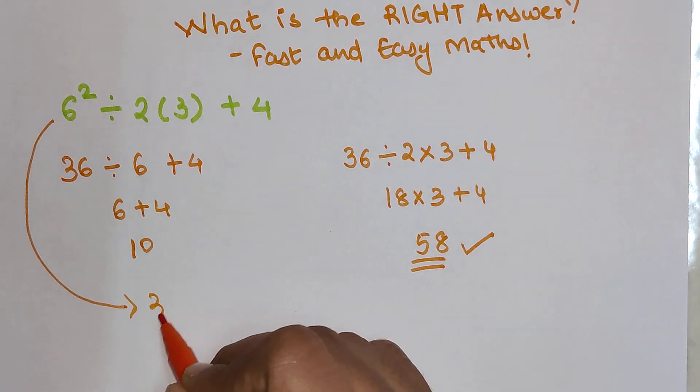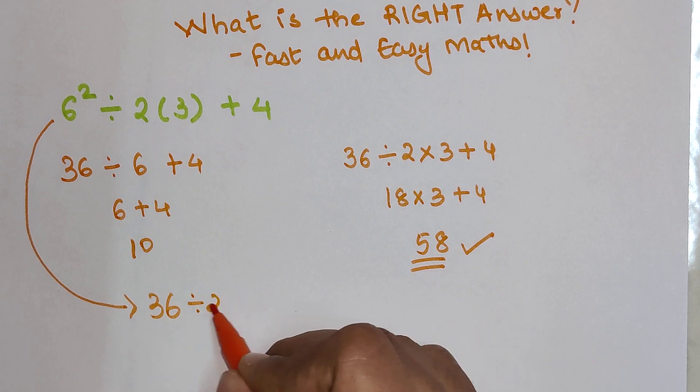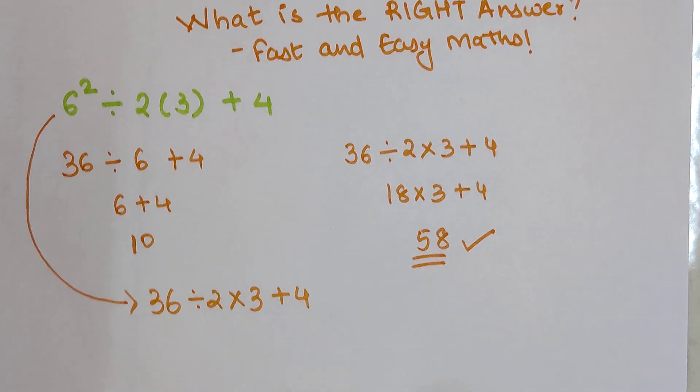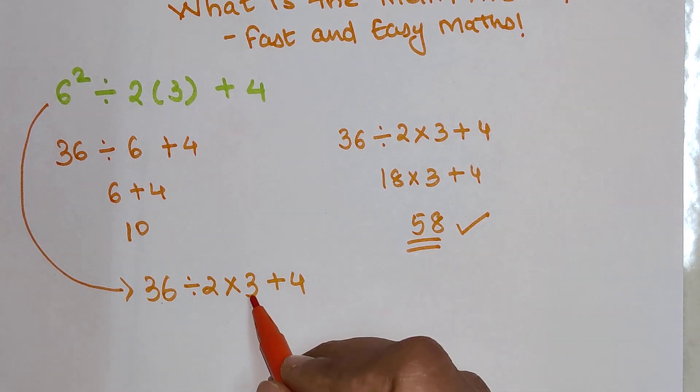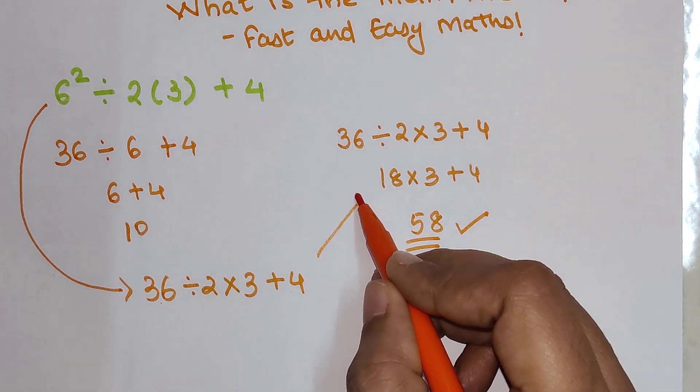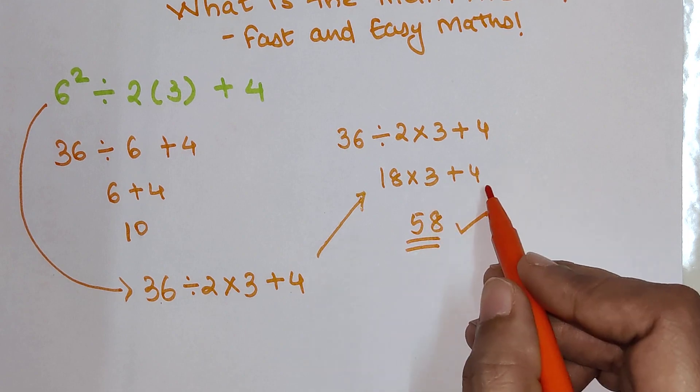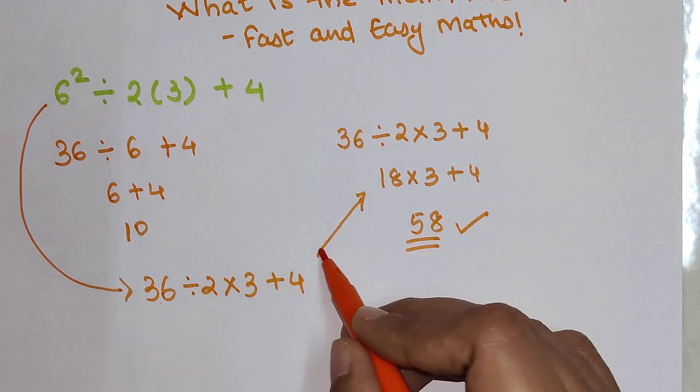So technically what should be your first step? Your first step is 36 divided by 2 into 3 plus 4. And using the BODMAS rule, you divide this first so you get 18, multiply that by 3, that gets you 54, and you add 4 to it, you get the answer as 58.